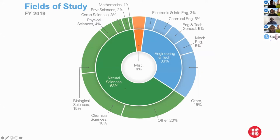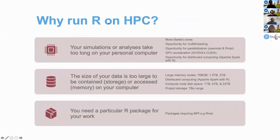Our clients represent different fields of study. Many of them come from natural sciences — about 63% of them — with biological sciences and chemical sciences being the majority of users at OSC. We also have a significant proportion of users from the engineering and technology field. One of the most important questions we can ask is: why run your R code on an HPC — high performance compute cluster?